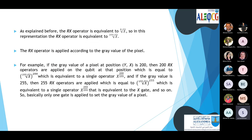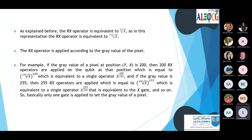Since the Rx operator is the k-th root of X, and the gray range is 0 to 255, then k equals 255 in the EFRQI representation. The Rx operator is applied according to the gray value of the pixel. For example, if the gray value is 200, then 200 Rx operators are applied, equivalent to X^(200/255). If the gray value is 255 (white pixel), then 255 Rx operators are applied, equivalent to the X gate. So we use a single operator per pixel to store its value.